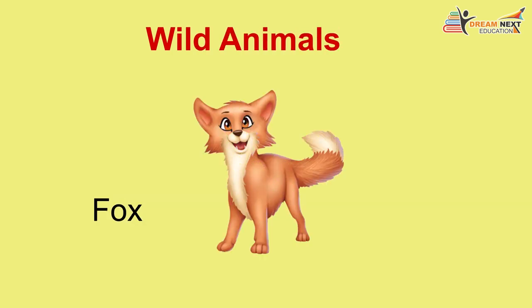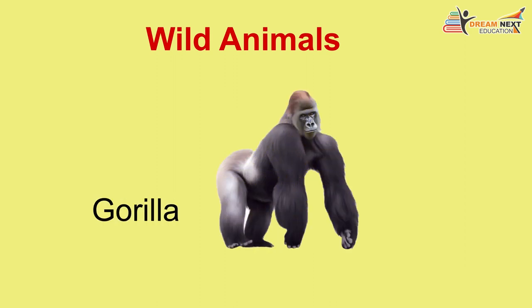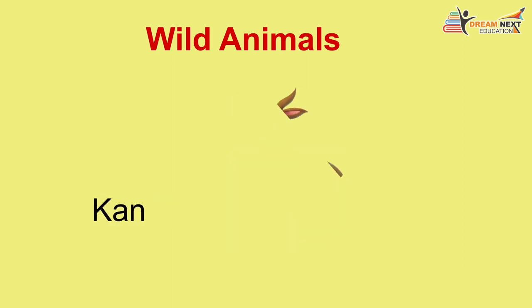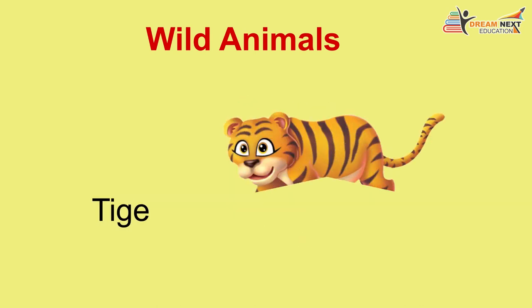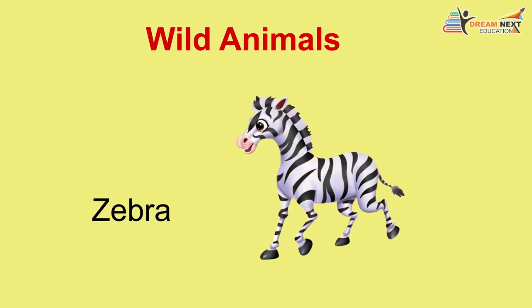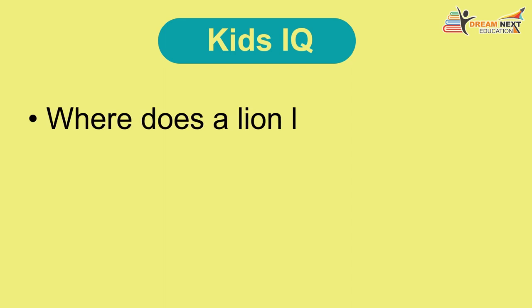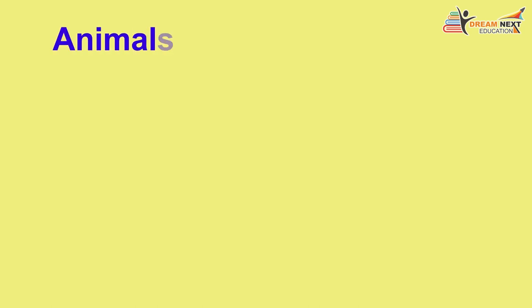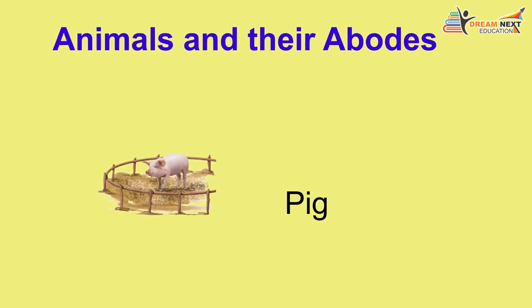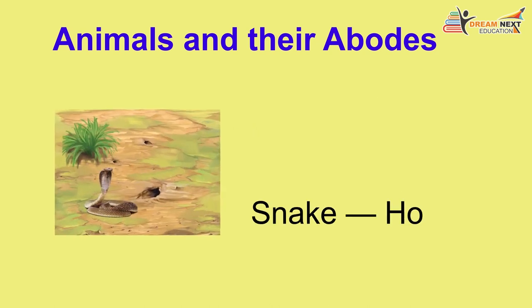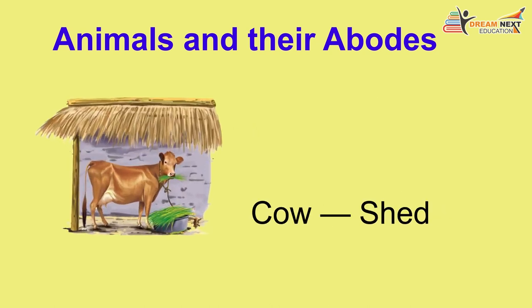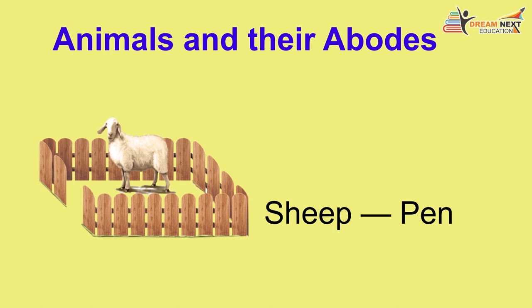Wild animals: lion, fox, deer, gorilla, giraffe, kangaroo, elephant, monkey, tiger, zebra, bear. Kids IQ: Where does a lion live? How does a kangaroo hop?